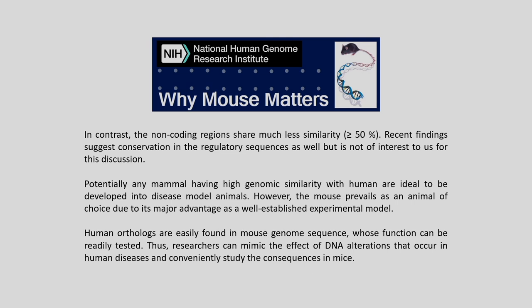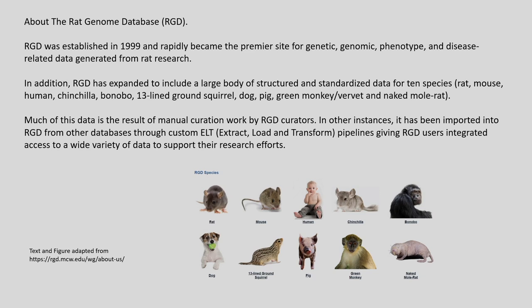Potentially any mammal having high genomic similarity with humans is ideal to be developed into a disease animal model. However, the mouse prevails as an animal of choice due to its major advantages and well-established experimental methods. Human orthologs are easily found in the mouse sequence, whose function can be readily tested, allowing researchers to mimic the effect of DNA alterations that occur in human diseases and conveniently study the consequences in mice.